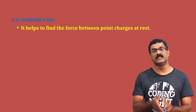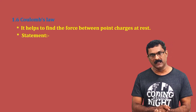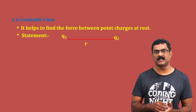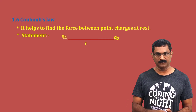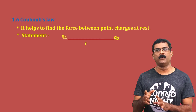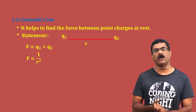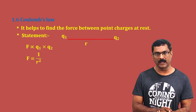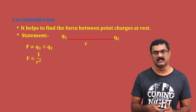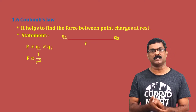The force F is proportional to q1 into q2, and F is proportional to 1 by r square. The statement is that force between two point charges is directly proportional to the product of the charges and inversely proportional to the square of the distance between the charges.